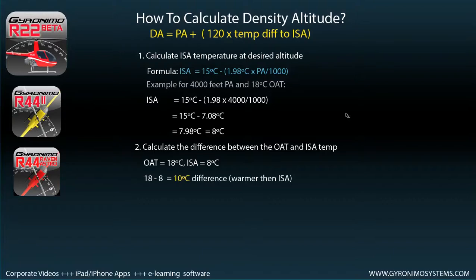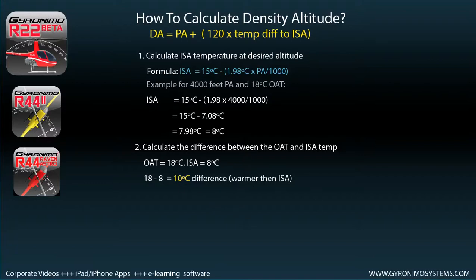Next, calculate the difference between the OAT and the ISA temperature. Your OAT is 18 degrees, ISA is 8 degrees, so 18 minus 8 is 10 degrees. That's the deviation from ISA — in our case it's 10 degrees warmer than the ISA temperature.